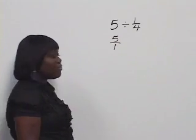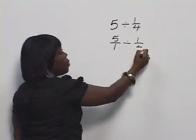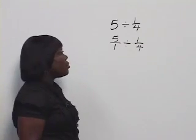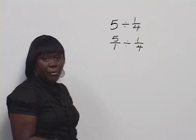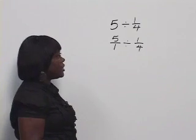Once we put the whole number over 1, we will rewrite our division sign and rewrite 1 fourth. You never want to divide a whole number divided by a fraction. You want to have two fractions at all times when you're doing division of fractions.